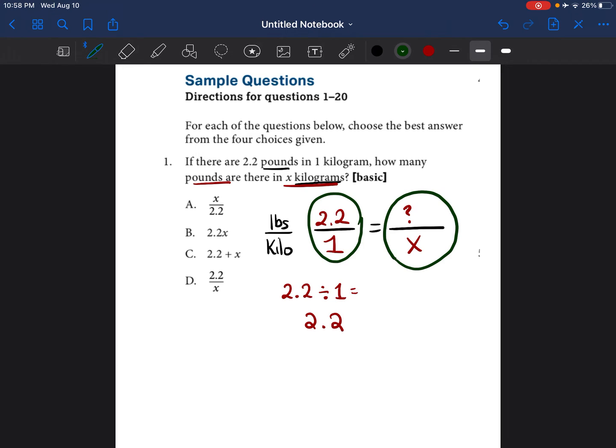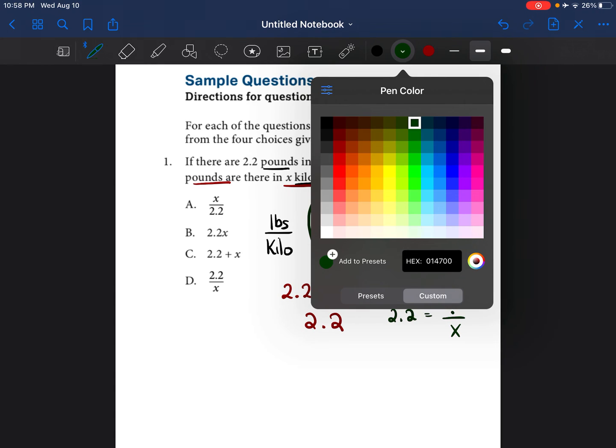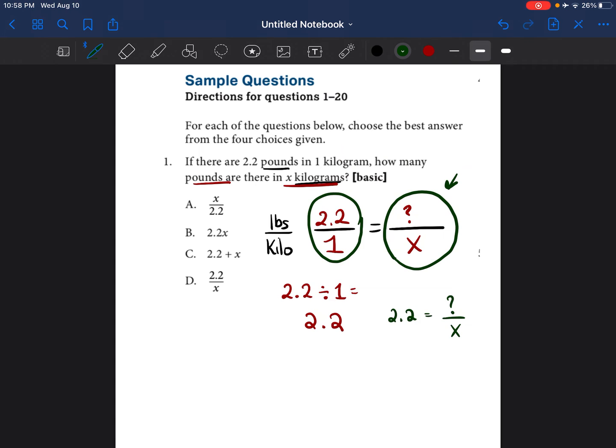So I just got to figure out how I can make this fraction equal to 2.2. So I'm going to set up 2.2 is equal to question mark over X. I want to get this question mark by itself.